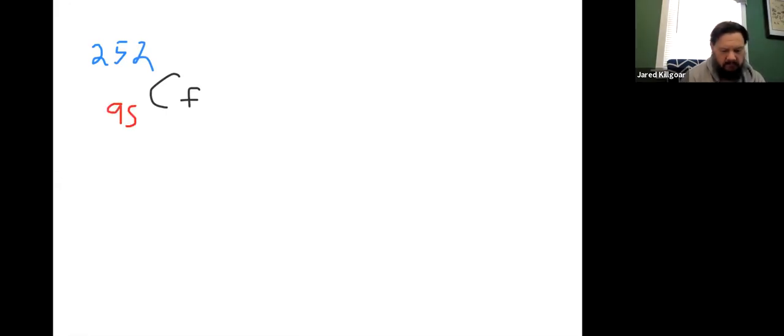So, there we go. So this first one right here, we have Californium-252, 98. And you're forming 140, 54, Xenon, Xe, plus blank plus 4 neutrons.